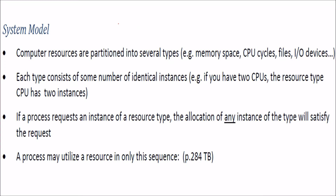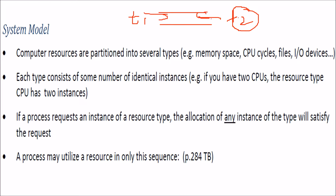First of all, what is a deadlock? Just understand it like this: you have a track and there are two trains, T1 and T2. This train wants to start but it is waiting for T2 to leave, and similarly T2 is waiting for T1 to leave. But because they are on the same track, they both cannot run.